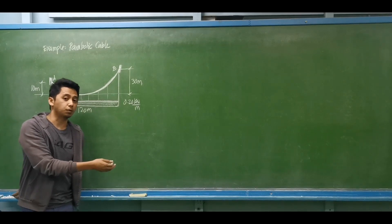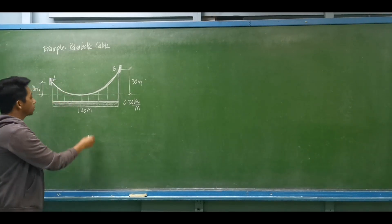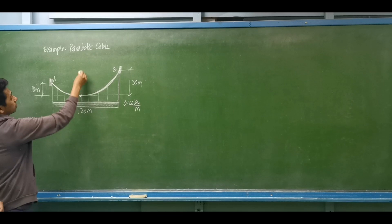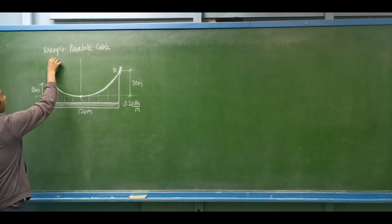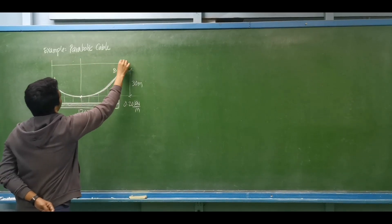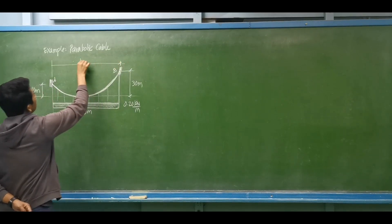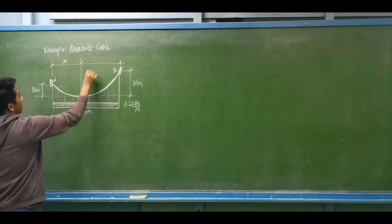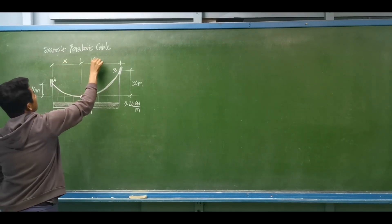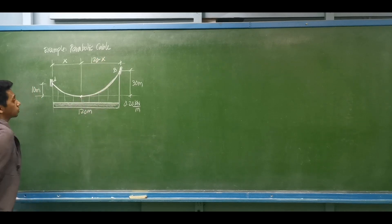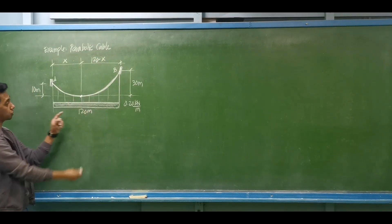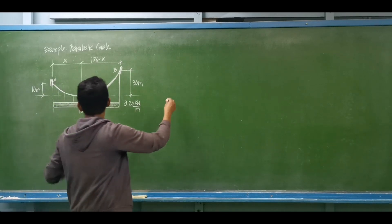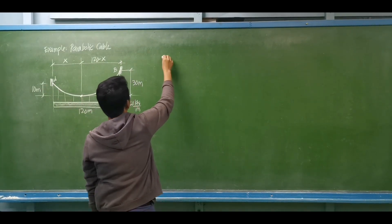We can apply the three equations of equilibrium here. What we have to do is locate the lowest point, then divide the span of the cable from that lowest point. Let's say this is x, and the other portion is 120 minus x. We then separate the two sections from this point — the left side and the right side.